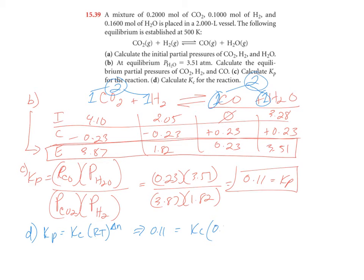R is 0.08206 atm liters. T is 500 Kelvin. Raised to a power of delta N, which is products, two total, minus two of your total reactants, two moles. And two minus two is zero. Anything to a zero power, which is what this is, this is raised to zero power, is going to be one.